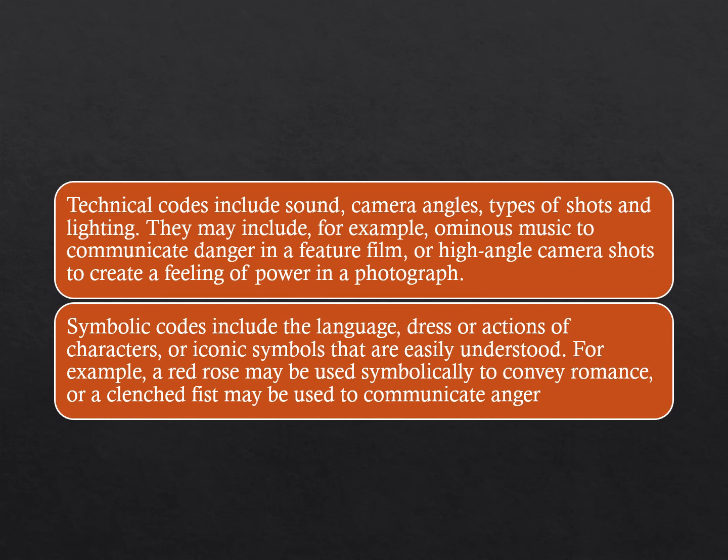Technical codes include sound, camera angles, types of shots, and lighting. For example, ominous music may communicate danger in a feature film, or high-angle camera shots may create a feeling of power in a photograph. Symbolic codes include language, dress, or iconic symbols that are easily understood. For example, a red rose may be used symbolically to convey romance, or a clenched fist may be used to communicate anger.